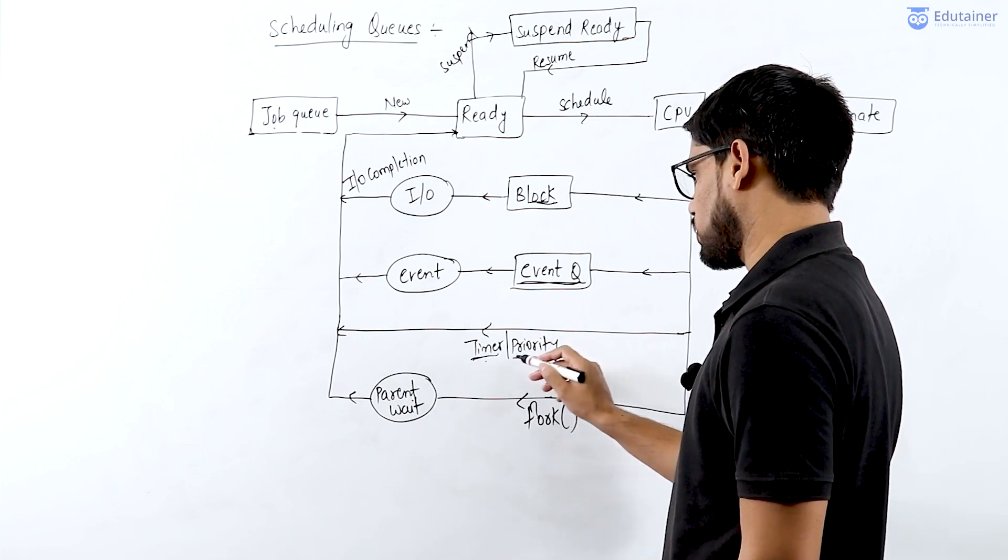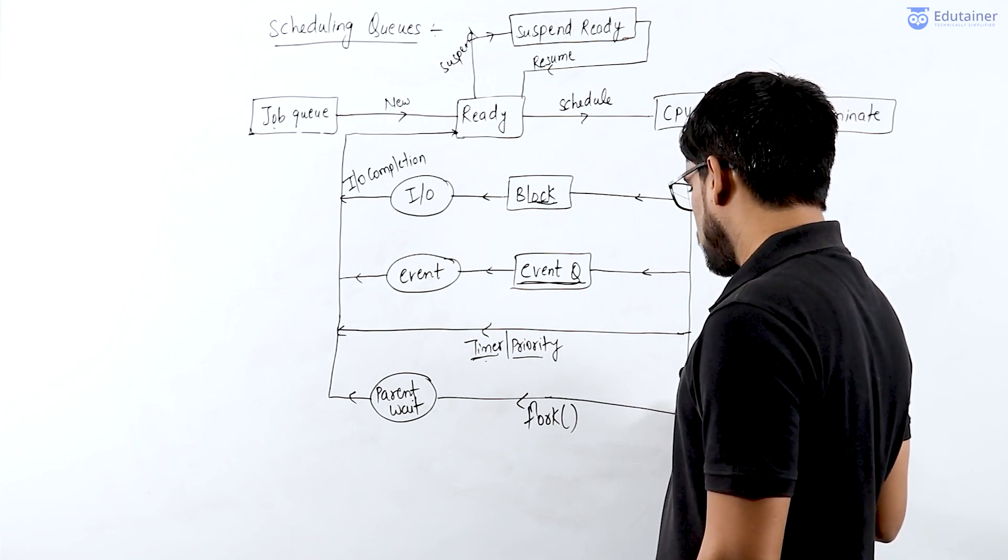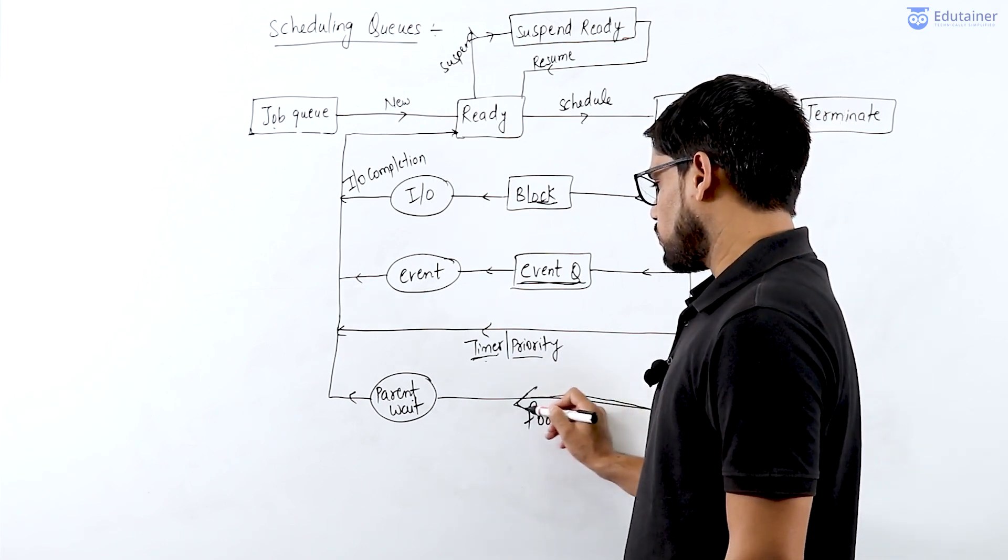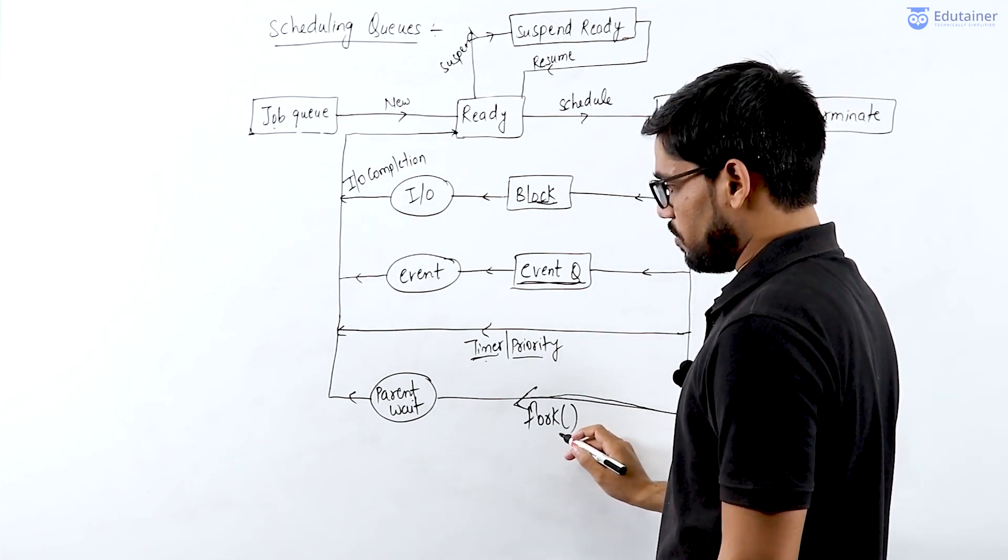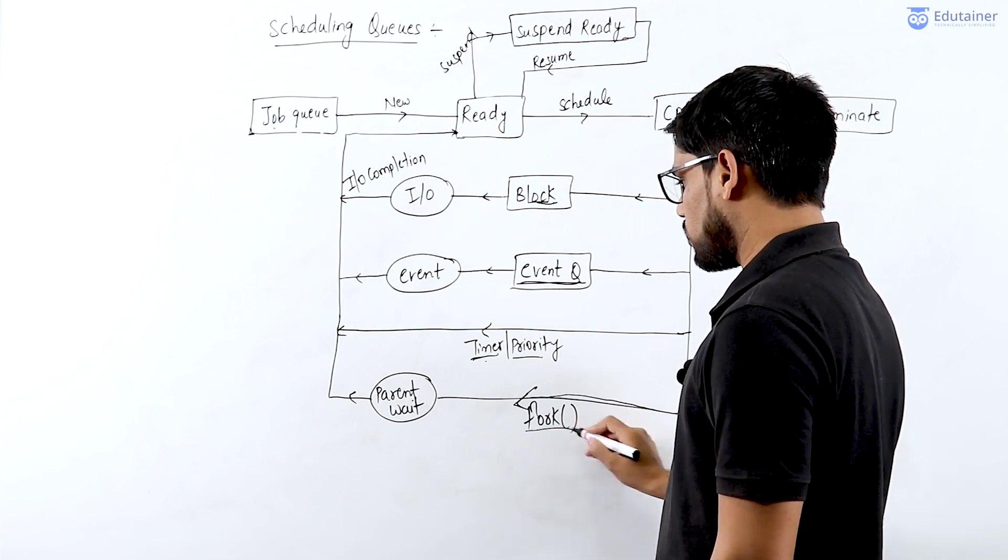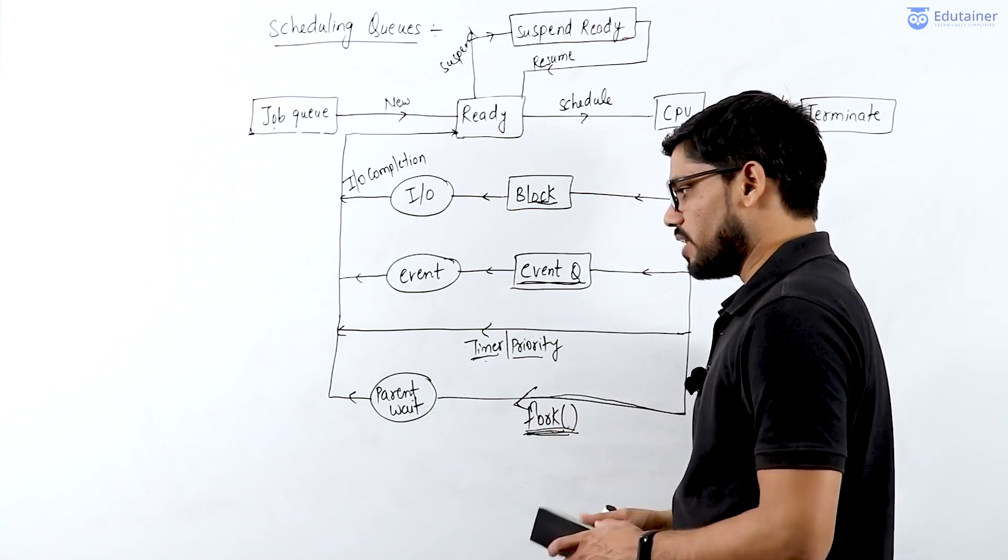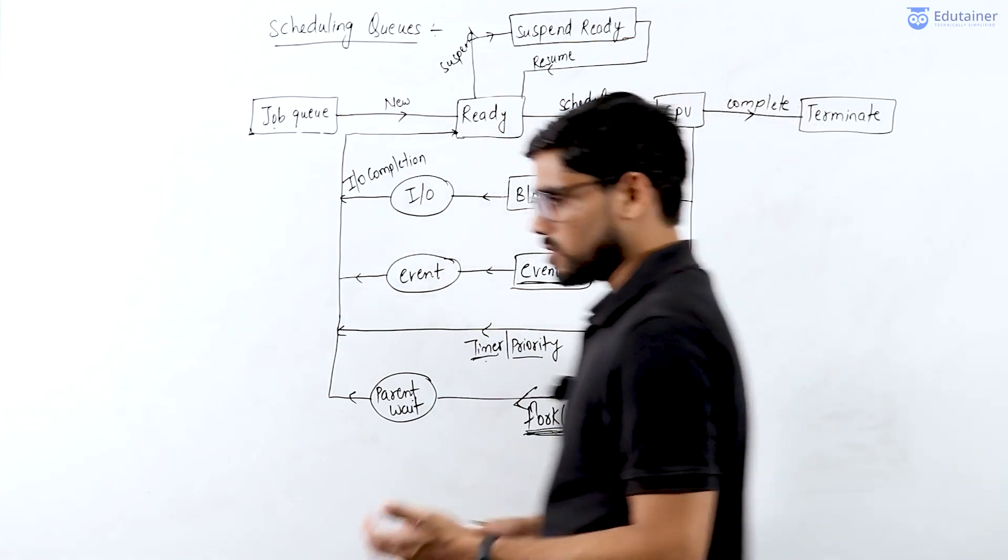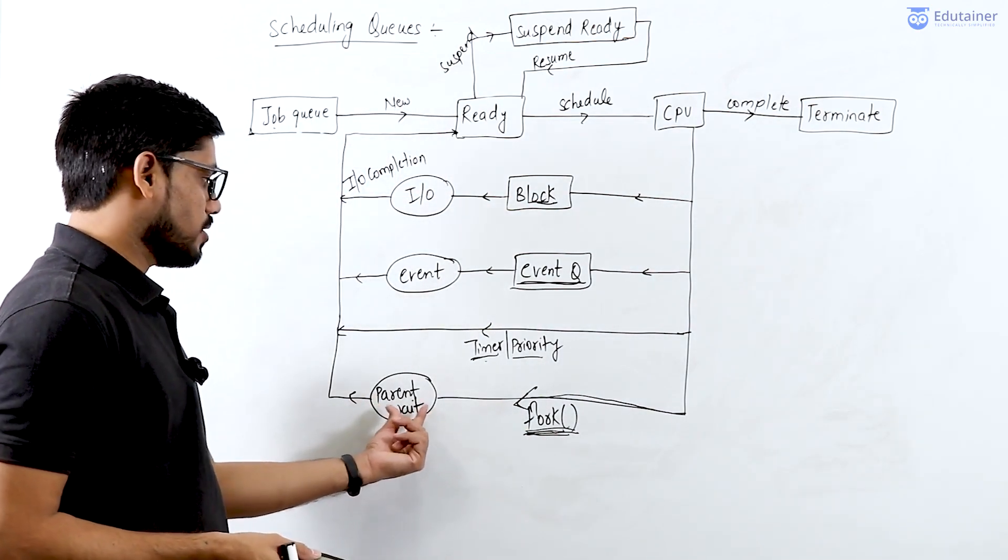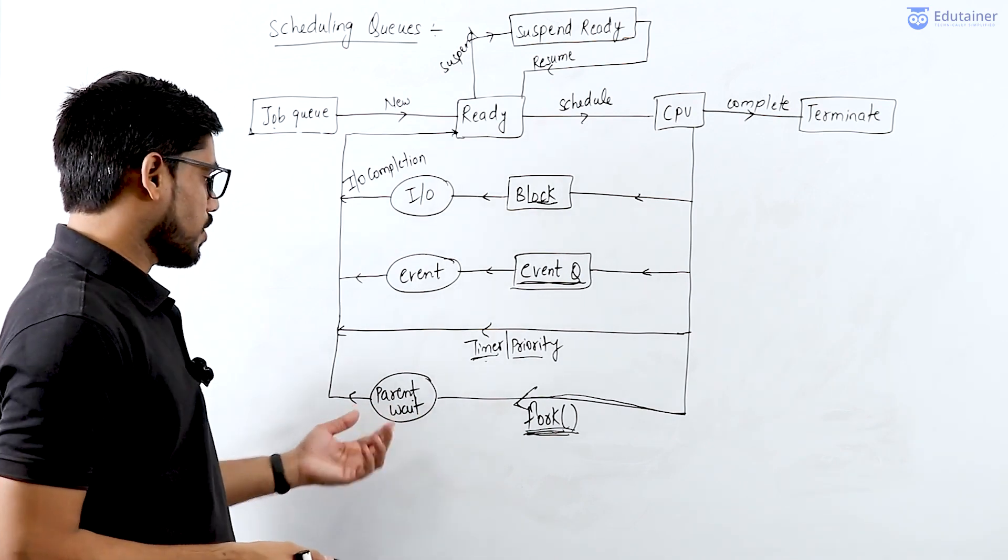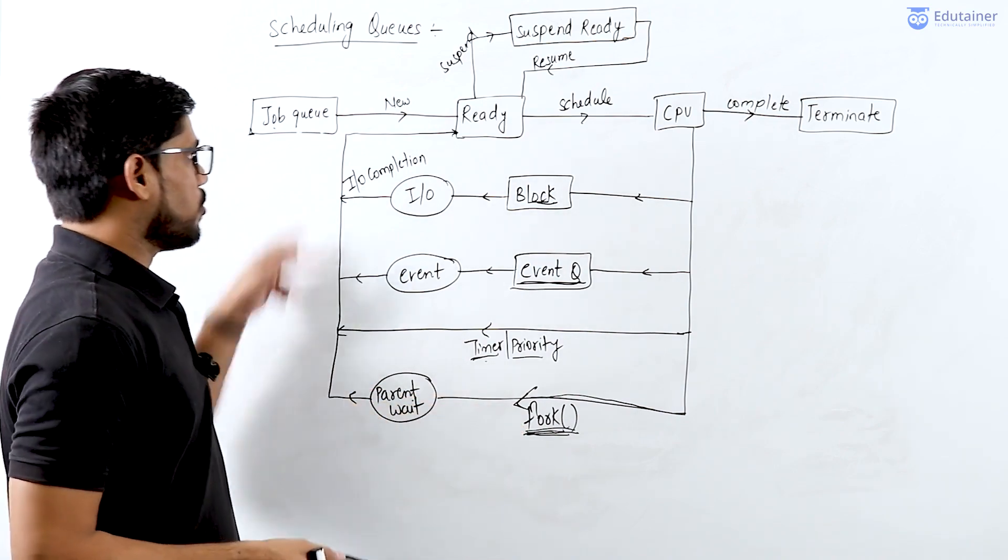For high priority processes or for some system calls, the running process is also blocked or waited by the CPU. Such system calls include the fork system call. In fork, a parent process creates its child. For the fork system call, the parent process will wait in the ready state, and when the child process executes its task, the parent process will go back to the CPU from the ready to run state.